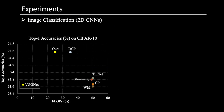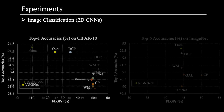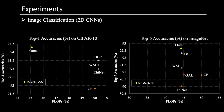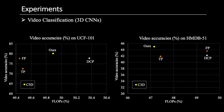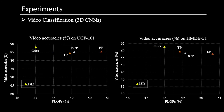Here are our results for pruning 2D CNNs when pruning VGG, ResNet, and MobileNet. Our MDP approach achieved the highest accuracies with a comparable number of FLOPs. This is the result for pruning 3D CNNs, pruning C3D and I3D. Please come to our poster for more details. Thank you.